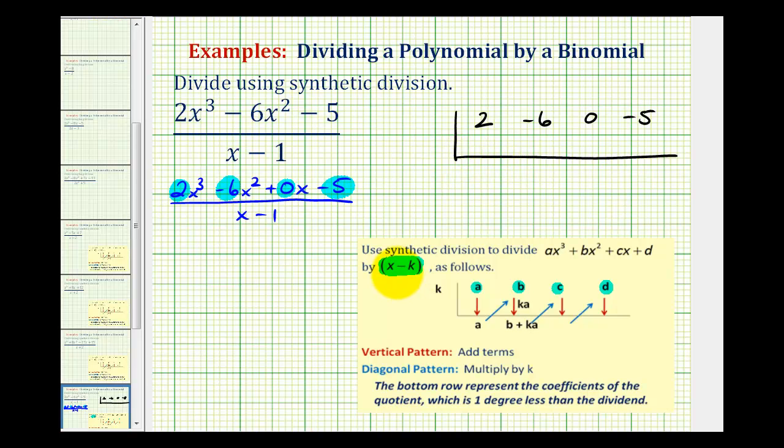And then notice when dividing by x minus k, we need the value of k out here. So these are going to be opposite signs. If we're dividing by x minus one, we'll have a positive one out here. Now to get this process started, we're going to bring this first term down. So we have a two here.